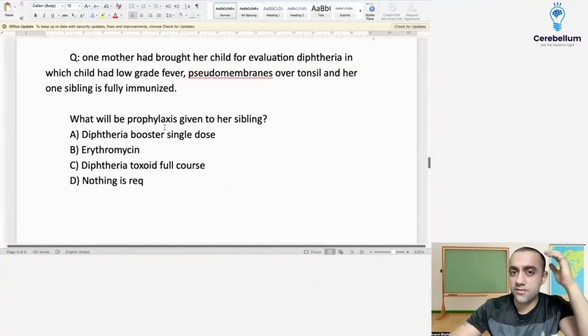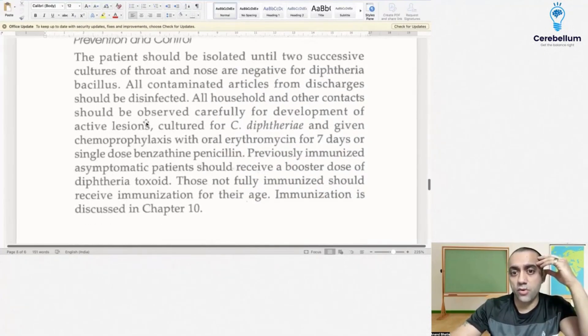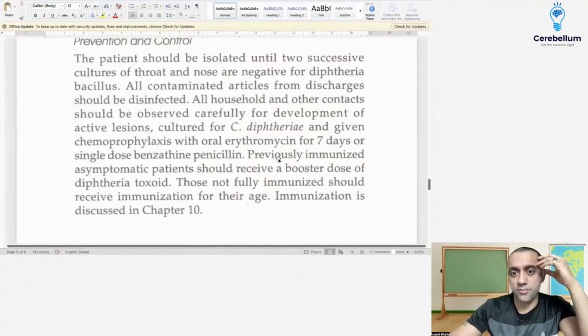Now this is also a nice, interesting question. The only highlighter is two things are there in this question: the sibling is fully immunized. According to the OPD picture, this very importantly last point: previously immunized asymptomatic patient should receive a booster dose of diphtheria toxoid.